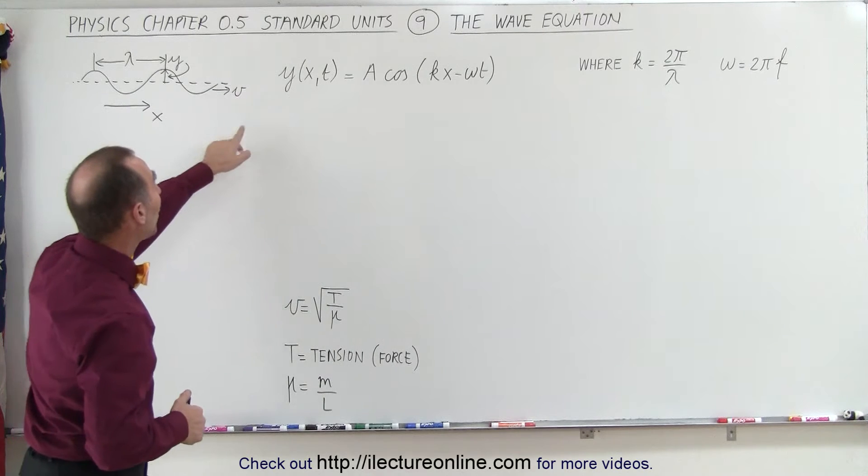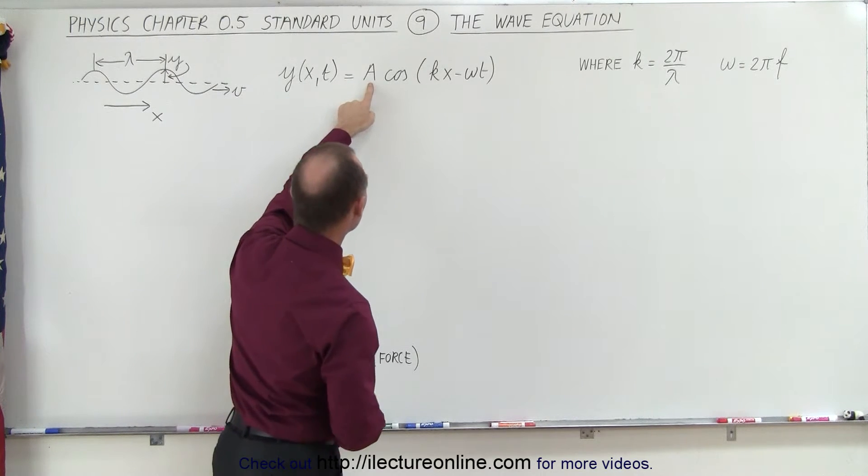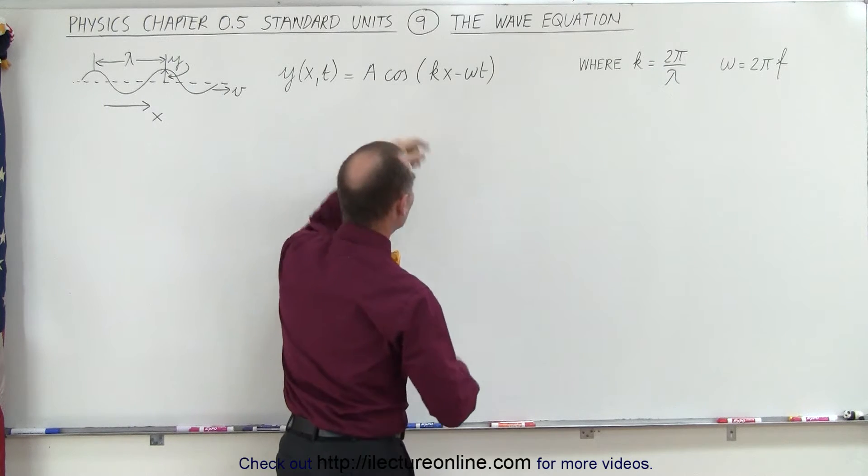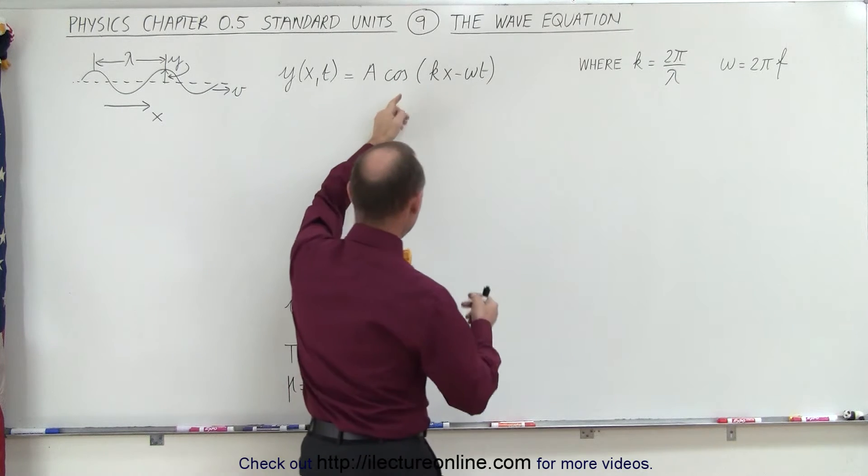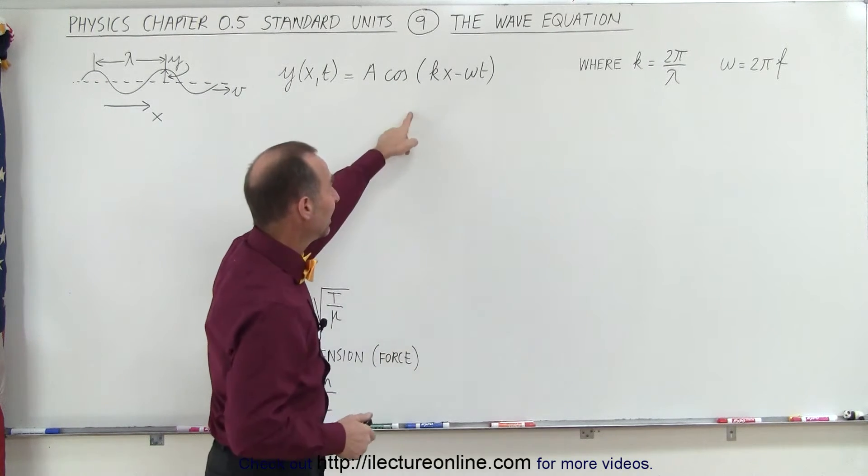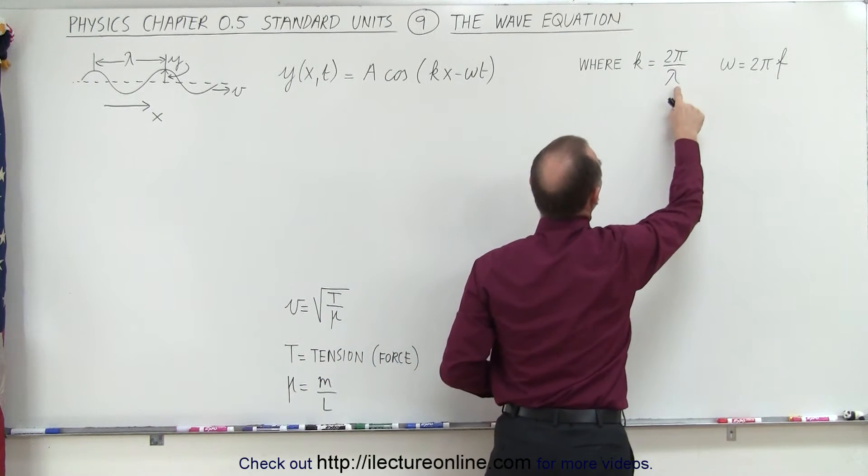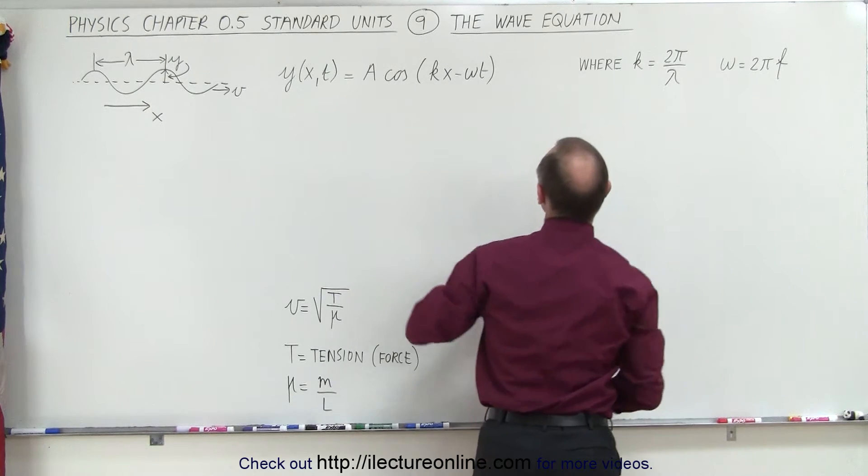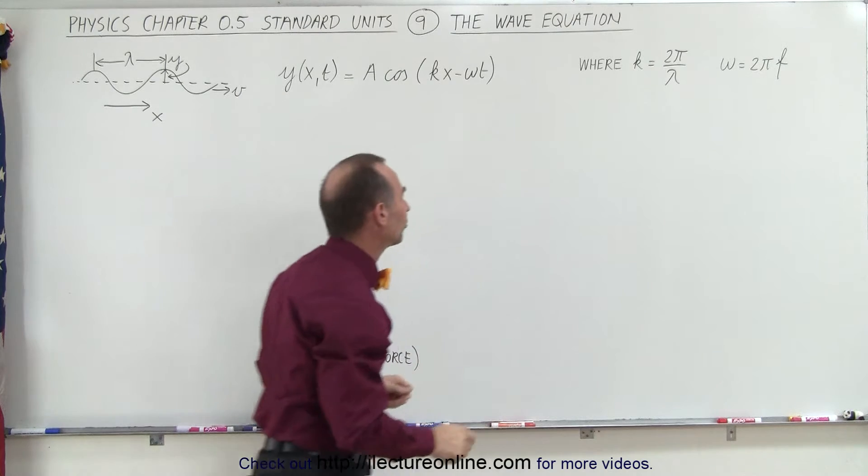The equation here, y, is a function of x and t, is equal to the amplitude of the oscillation times the cosine or the sine, it doesn't matter which one you use, depends on the initial conditions, of the angle kx minus omega t. Now k is what we call the wave number, which is equal to 2 pi divided by the wavelength, lambda, and omega is equal to 2 pi times the frequency of the oscillation.